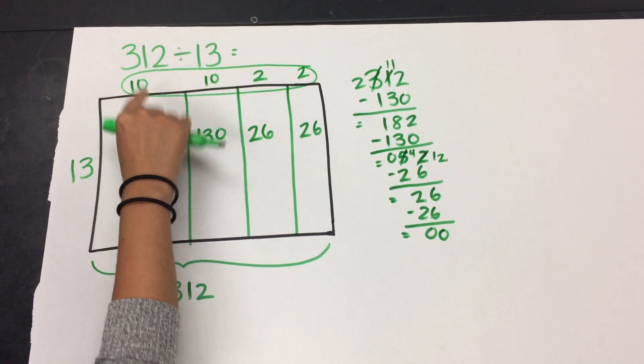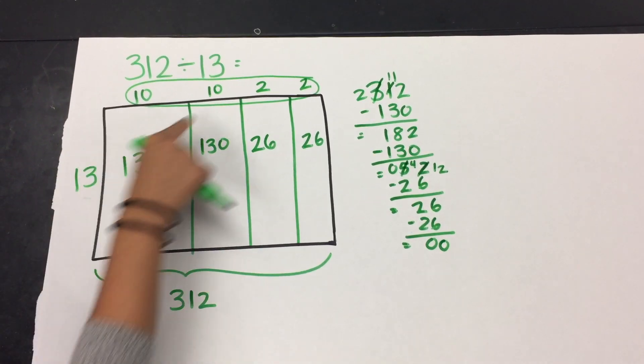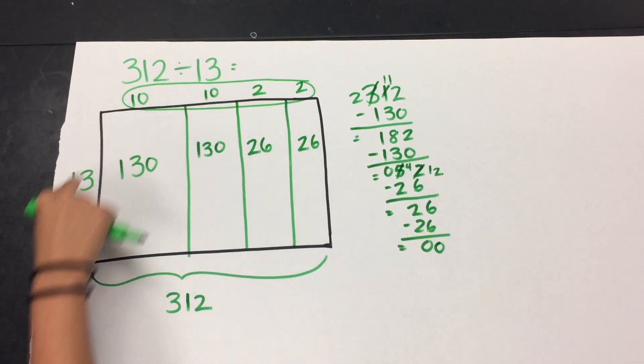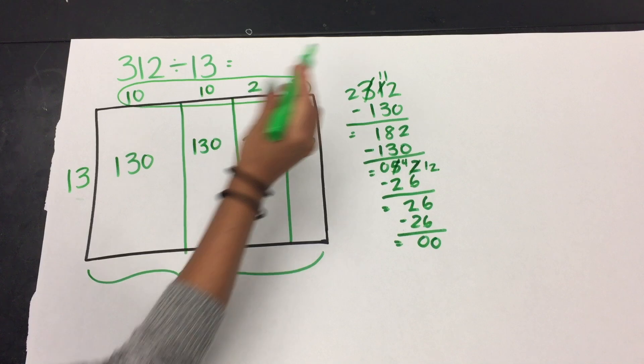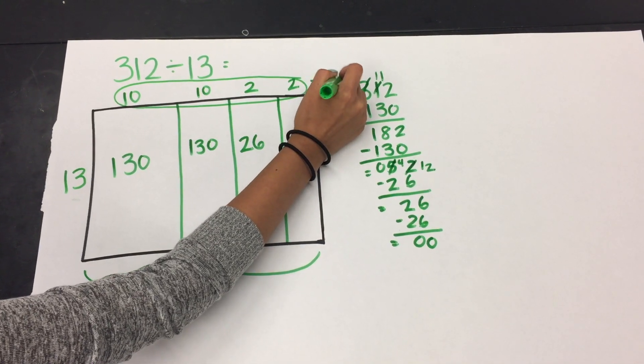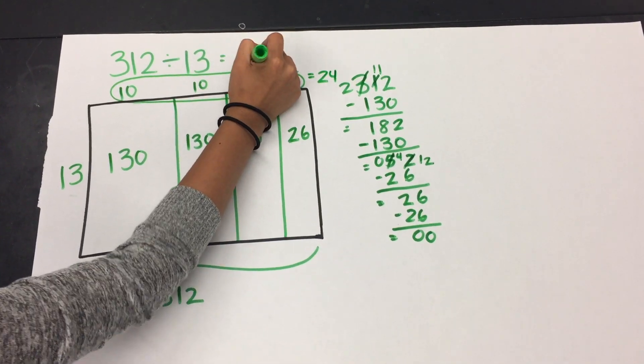I have 10 groups of 13, 10 groups of 13, 2 groups of 13, 2 groups of 13 to be a total of 24 groups of 13.